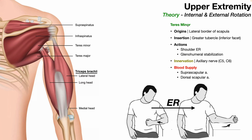The other external rotation muscle is teres minor. It's important to clearly differentiate teres minor from teres major. Teres major is not a rotator cuff muscle. There are two criteria to be a rotator cuff muscle: the muscle must originate off the scapula, and it must insert on one of the tubercles of the humerus. Teres major originates from the inferior angle of the scapula, but it inserts lower on the humerus near the bicipital groove — not on a tubercle — so it is not a true rotator cuff muscle.